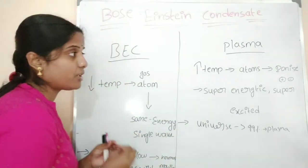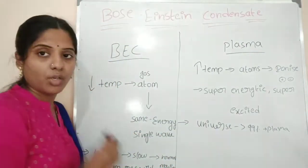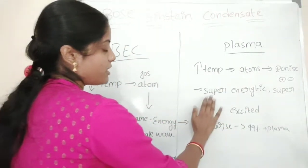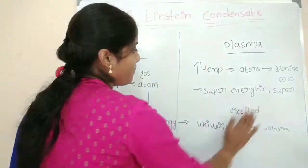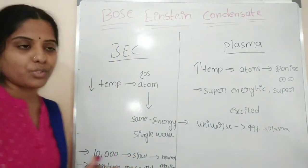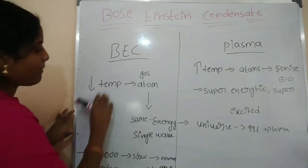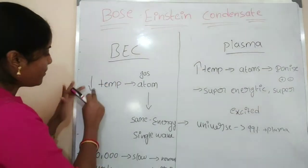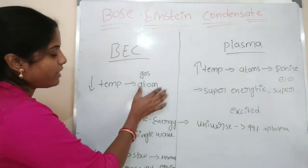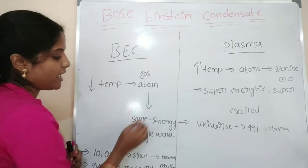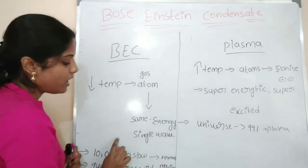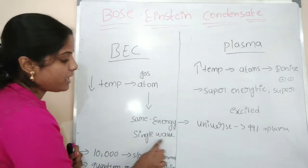In plasma the speed is very high, whereas in Bose-Einstein condensate the gas atoms are cooled to the same energy state and behave as a single quantum wave.